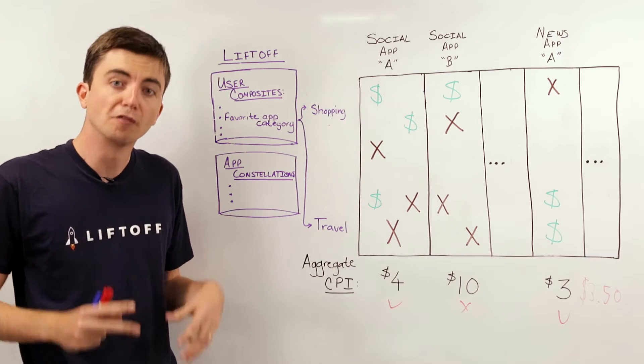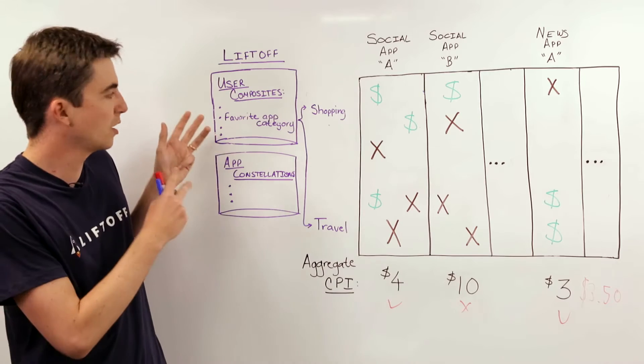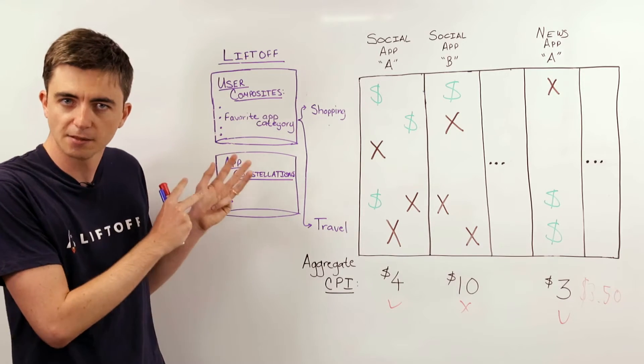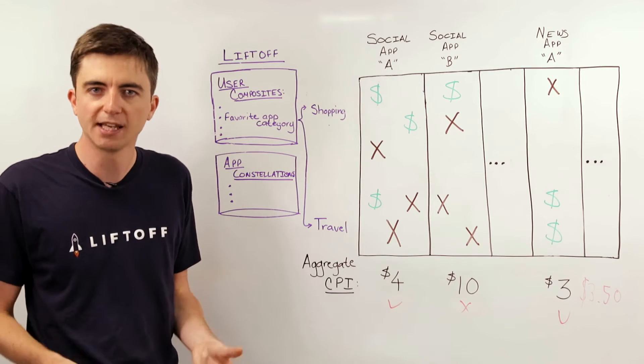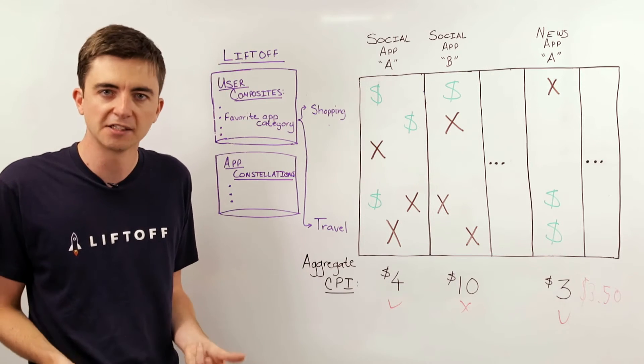We built up data stores of user composites, which are demographic and preference data per user, and app constellations, which are representative view of the kind of applications that are on a user's phone and that they engage with.